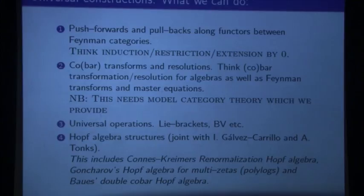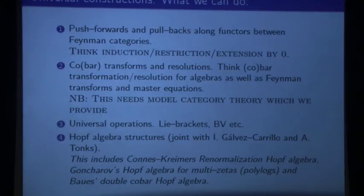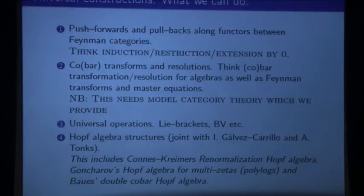What kind of universal constructions can we do? Just like we had with group representations — if I have a morphism between two groups and a representation, then pushing forward and pulling back gives induction and restriction. I can do the same thing with full Feynman categories. So for instance the prop generated by an operad is a push-forward from the Feynman category of operads to the Feynman category of props. This is what MacLane said: everything should be a Kan extension. All the constructions you can do — induction and restriction — are Kan extensions.